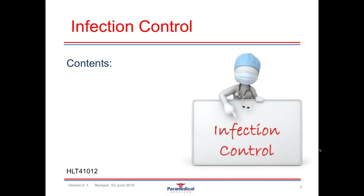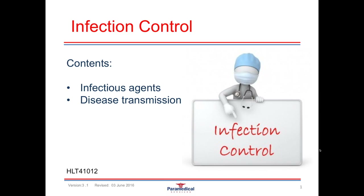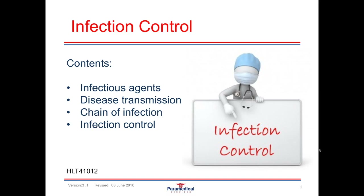Firstly, we will talk about the different types of infectious agents that lead to somebody obtaining a disease, and how disease is transmitted from one person to another. This occurs through the chain of infection, and understanding the chain of infection is highly important for the work that we do, especially when it comes to procedures of infection control, because through these infection control procedures this is how we can stop infection spreading from one person to another.